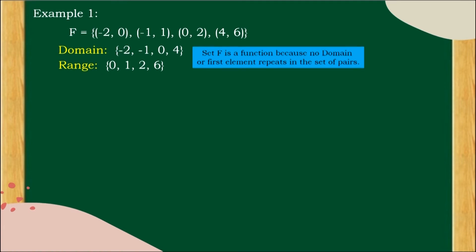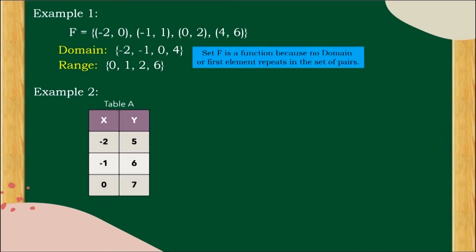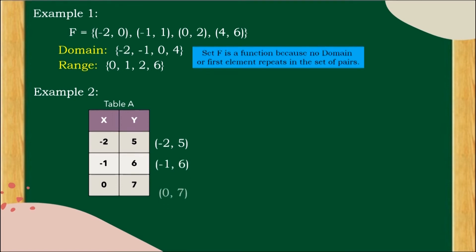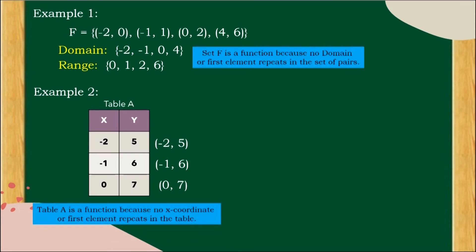Example 2: Table A has x-coordinates and y-coordinates. The pairs are: (negative 2, 5), (negative 1, 6), and (0, 7). Table A is a function because no x-coordinate or first element repeats in the table.